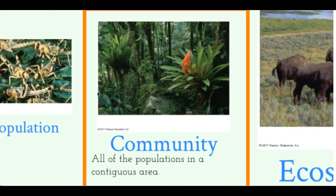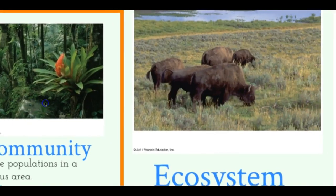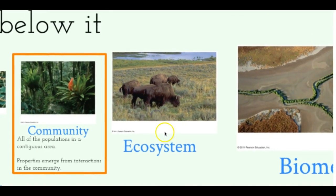The next level up is a community. A community is all of the populations within a certain area, meaning we're not only talking about one species, but all of the species living in one area. The next one is called an ecosystem. An ecosystem covers the same area as a community, but instead of only counting the biotic factors — the living species — we're also considering the abiotic factors such as the environment and rainfall.